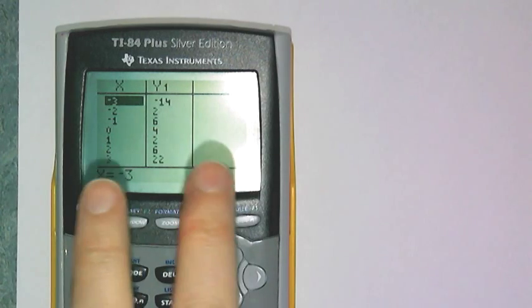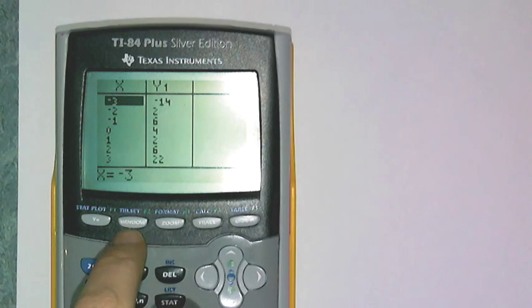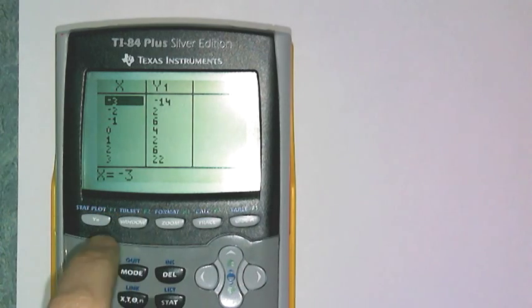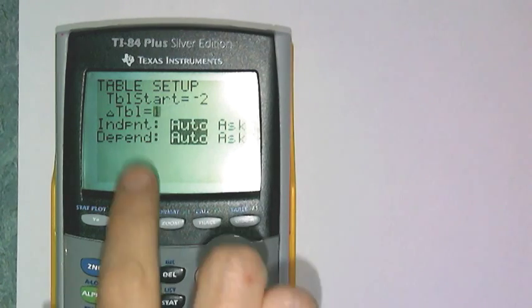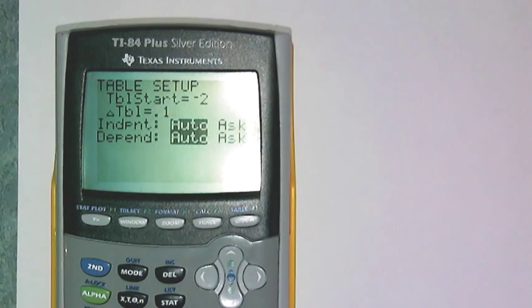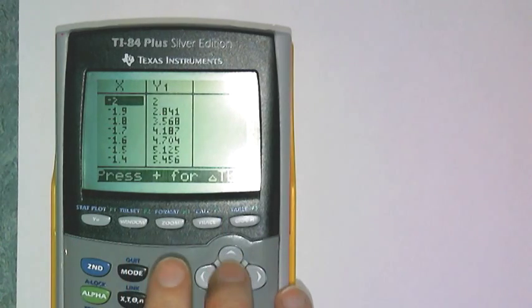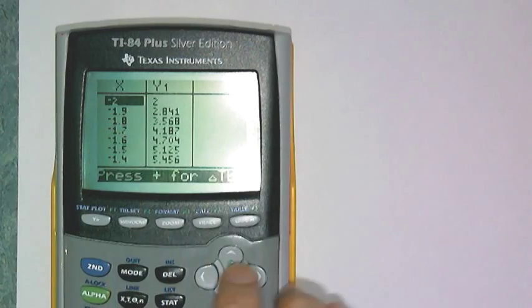I can shrink that interval considerably with this technology by changing how the table counts. I have two ways of doing this. One is to use the table setup menu by pressing second and then window. I'm going to have it start at negative 2, and then instead of having it count by 1, I'm going to have it count by a tenth.